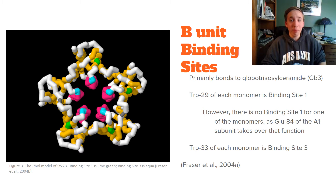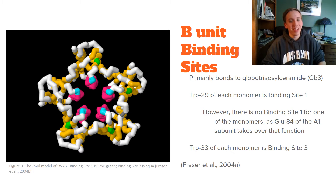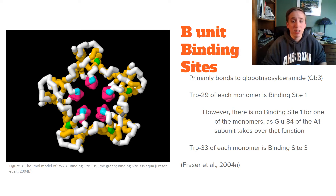We will be investigating the B unit here. The primary function of STX2B is to bind to the glycolipids on the exterior of cells. In most cases, the B unit binds to a glycolipid known as Globotriaosylceramide, thankfully abbreviated to GB3. The tryptophan amino acid at residue number 29 in four of the five monomers is displayed in lime green in figure 3. This is binding site 1. It is not present in the fifth monomer since the A1 subunit feeds through the B unit, and the glutamic acid at residue number 84 in the A1 subunit obstructs this tryptophan residue.